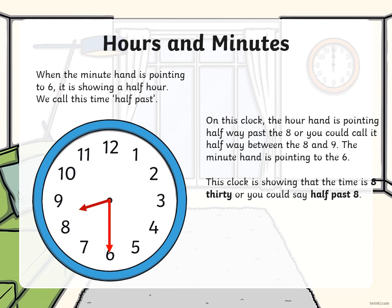On this clock, the hour hand is pointing halfway past the eight, or halfway between the eight and nine. The minute hand is pointing to the six. This clock is showing that the time is 8:30, or you could say half past eight.